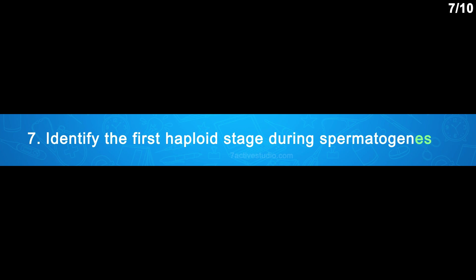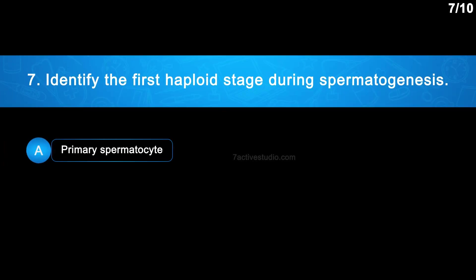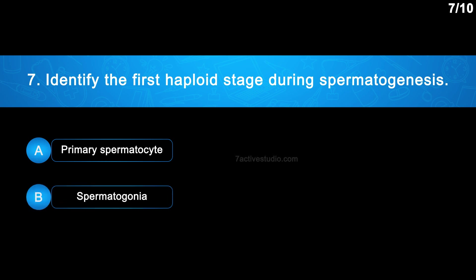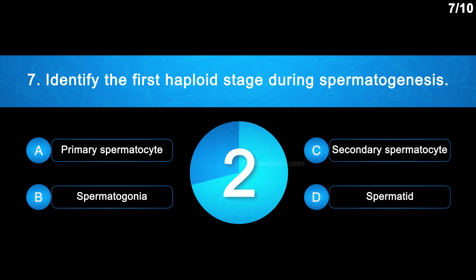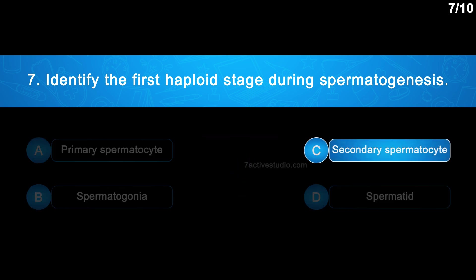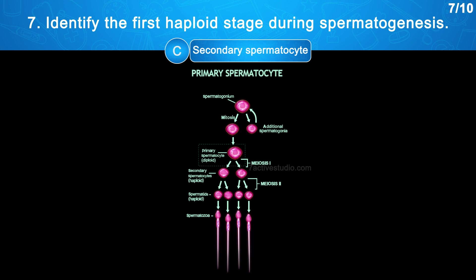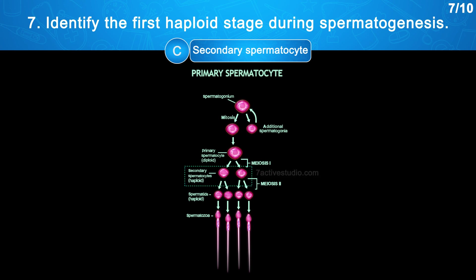Question 7: Identify the first haploid stage during spermatogenesis. Option A: Primary spermatocyte. Option B: Spermatogonia. Option C: Secondary spermatocyte. Option D: Spermatid. The correct answer is Option C — secondary spermatocyte. Primary spermatocytes and spermatogonia are diploid. The primary spermatocyte undergoes meiosis 1 and produces haploid secondary spermatocytes. Spermatids are also haploid, but they are not the first haploid stage formed.